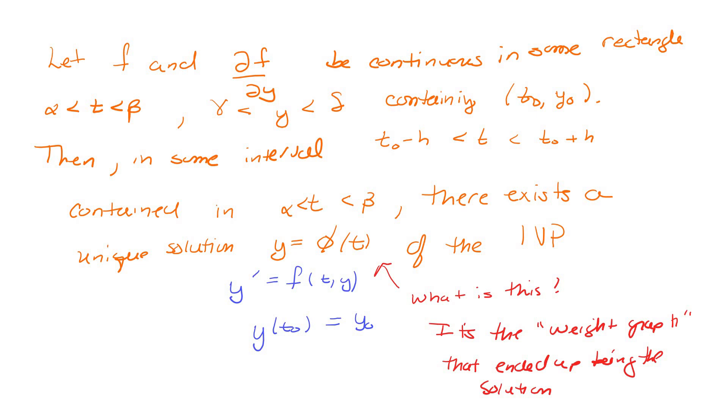So back to the beginning. You have an F. The partial of F with respect to Y is continuous in some rectangle. It doesn't have to be a rectangle. I find that dissatisfying. That's okay. It's got to contain that initial condition. So that was the problem with your other one. Then in some interval that's contained inside this, some interval around the T0, you have a unique solution.